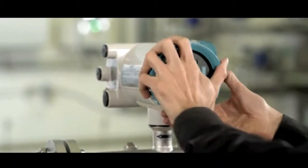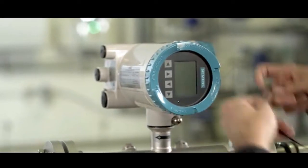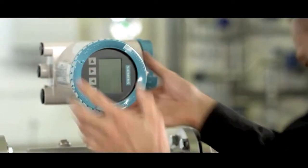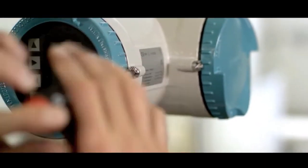Now screw the cover back on and make sure that the ring is properly positioned. Finally, tighten the lid lock screw again.